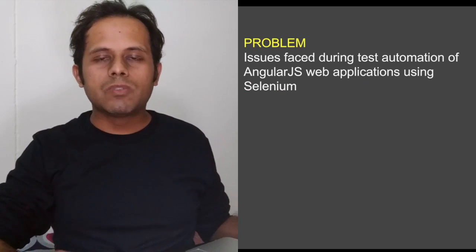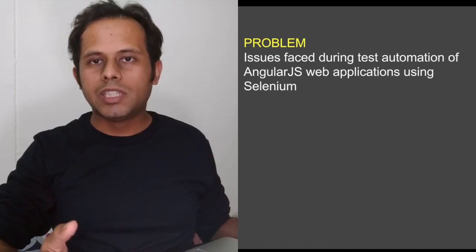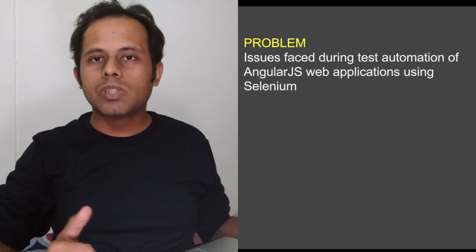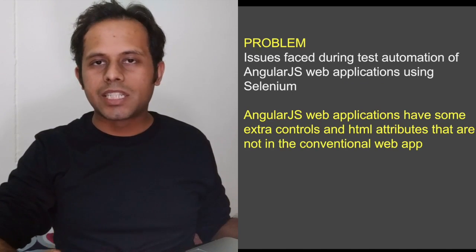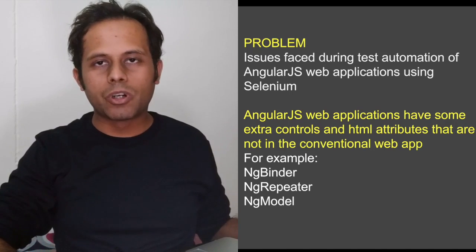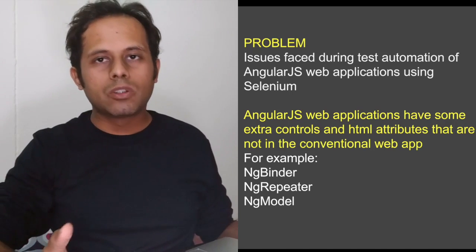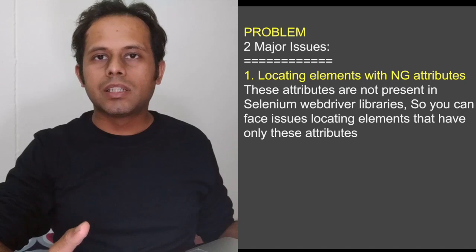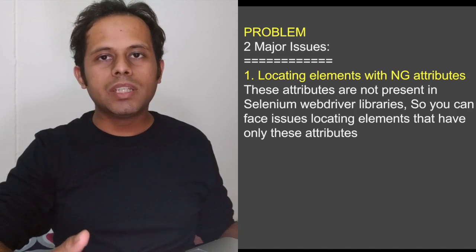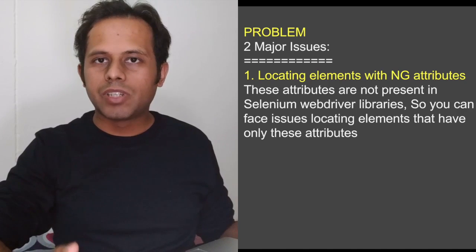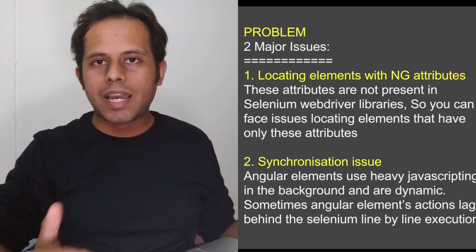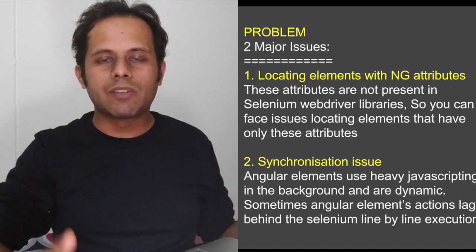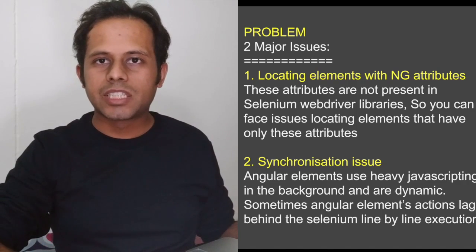Coming to the second part — what are the issues we face while doing test automation of these web applications using Selenium. In AngularJS there are some extra controls or extra attributes in the HTML, like ng-controller, ng-repeater, ng-model, etc. We face two major issues. The first one is that in case there are elements that have only these ng-attributes, it becomes a little difficult to locate these elements with Selenium libraries.